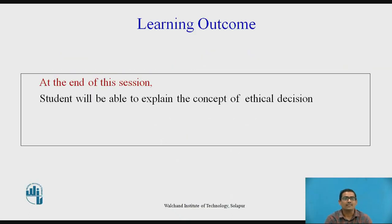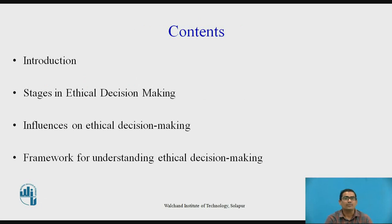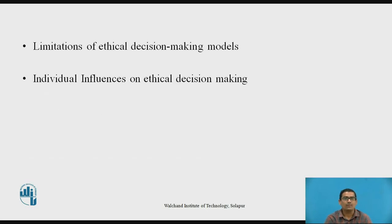The learning outcome of this topic is: at the end of the session, the student will be able to explain the concept of ethical decision. The contents of these topics are: first, introduction; then what are the stages in ethical decision making; then the influences on ethical decision making; the framework for understanding ethical decision making; limitations of ethical decision making models; and then individual influences on ethical decision making.